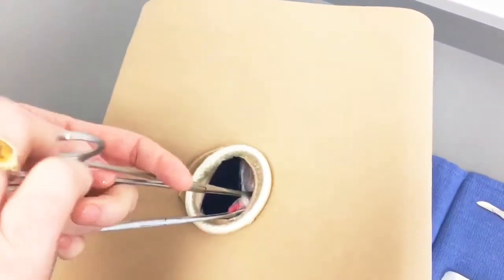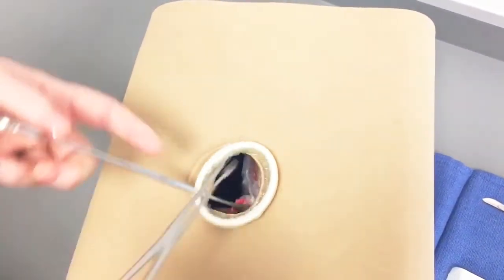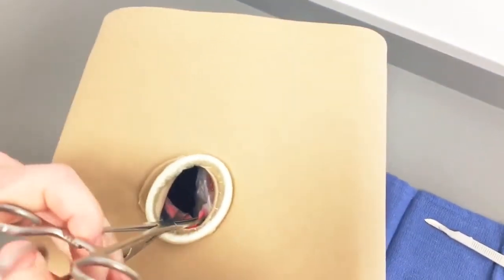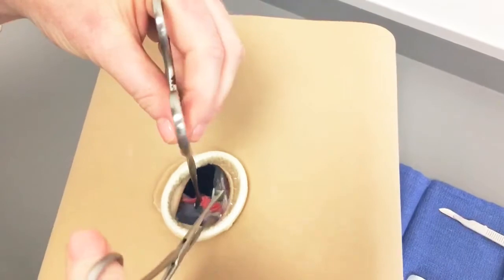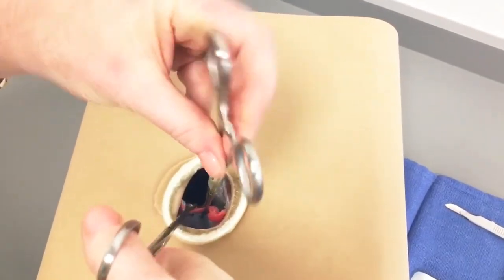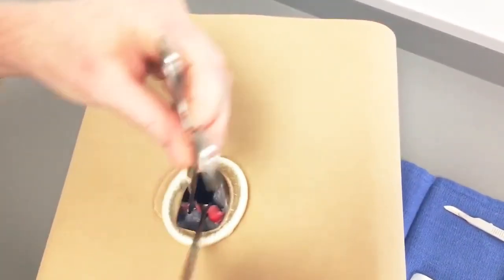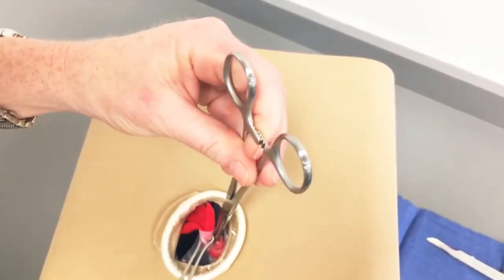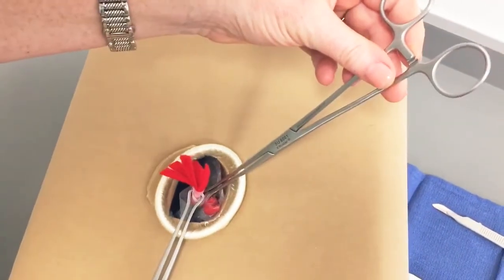Babcocks are then used to gently grasp the fallopian tube and walk it out to the fimbriated end. Since the model is lightweight, an assistant can tilt the model as needed to simulate Trendelenburg and or an airplaning motion typically used intraoperatively.